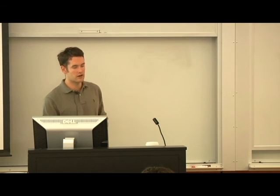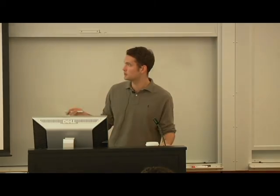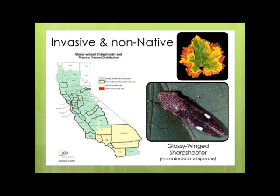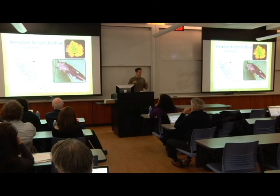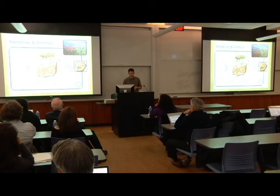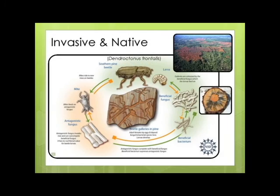We're used to hearing about species that are both invasive and non-native, like the glassy-winged sharpshooter, first discovered in central California in the mid-1990s. It's a serious problem because it transmits a bacterium that causes Pierce's disease — you get distinctive symptomology in grapes, and we're right near Napa Valley here. A lot of energy is being put into suppressing this pest. We understand these systems: it invaded from somewhere else and is now moving out of control.